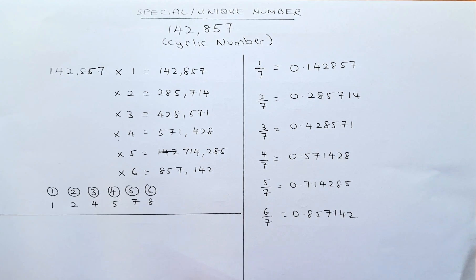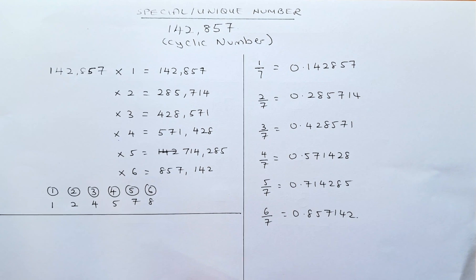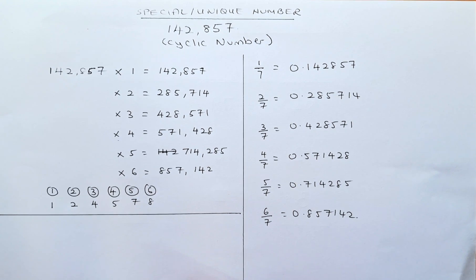If you can see, the number is made up of 6 different digits: 1, 2, 4, 5, 7, 8. And there's a pattern to both multiplication by 1 to 6 as well as the fraction of 7.